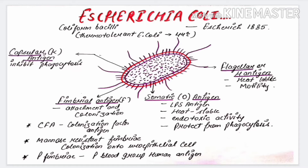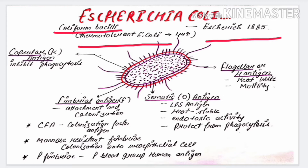E. coli was discovered by Escherich in 1885. It is also called coliform bacilli and it has a variant called thermotolerant E. coli. This variant can survive up to 44 degrees Celsius and indicates recent contamination of drinking water with animal or human feces.